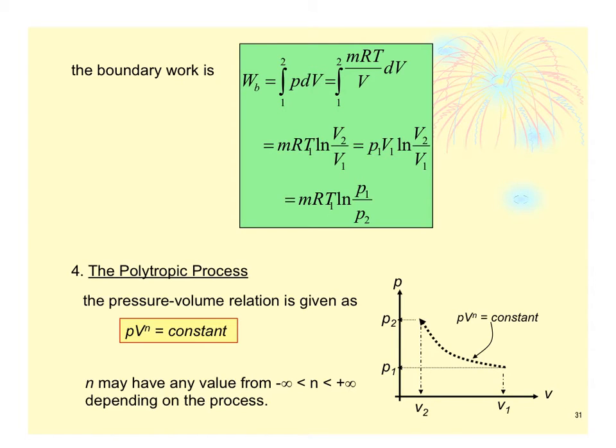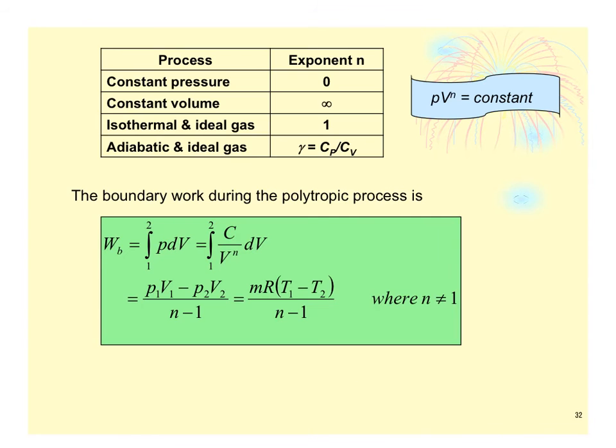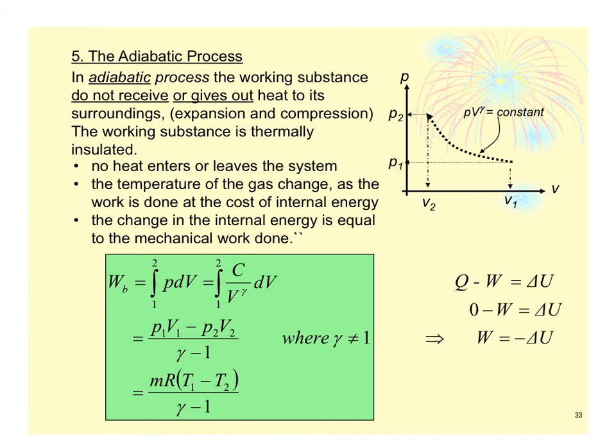Then we have the polytropic process, which is PV^n is constant, and the equation used is this one. If you are dealing with ideal gas, you are going to have temperature difference over here.